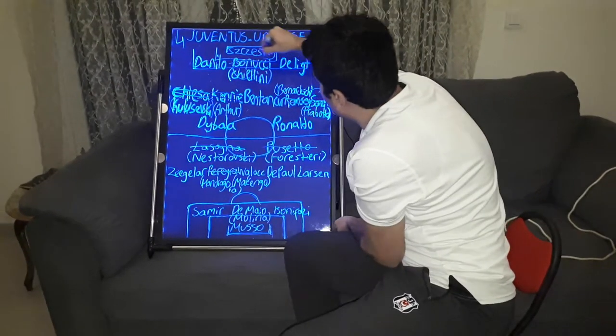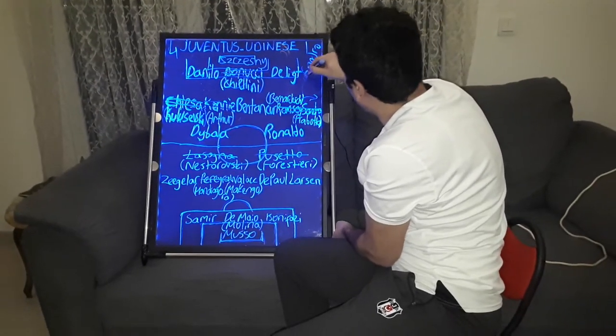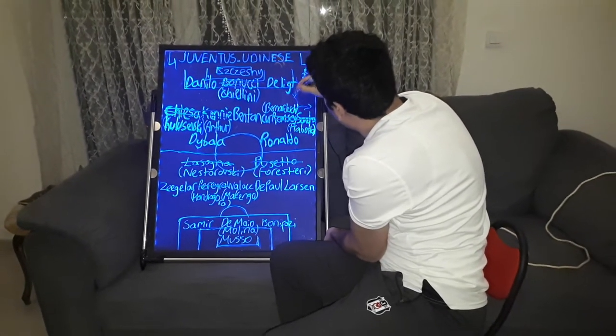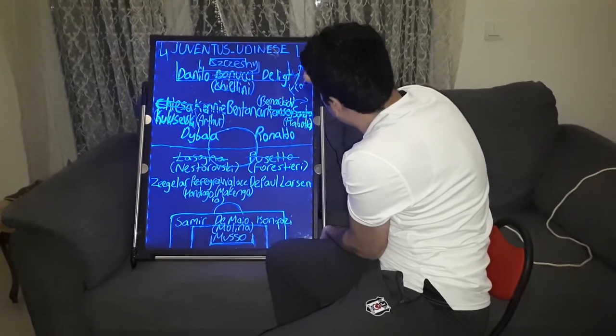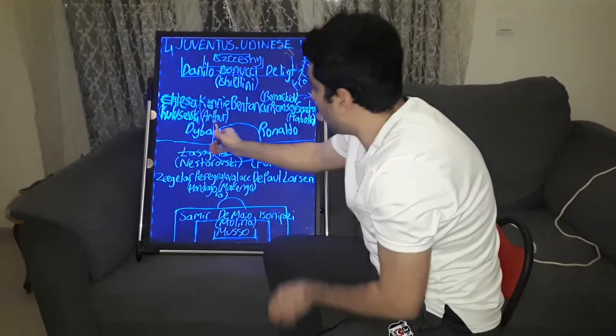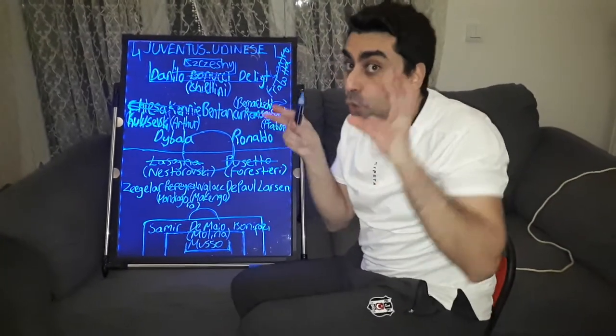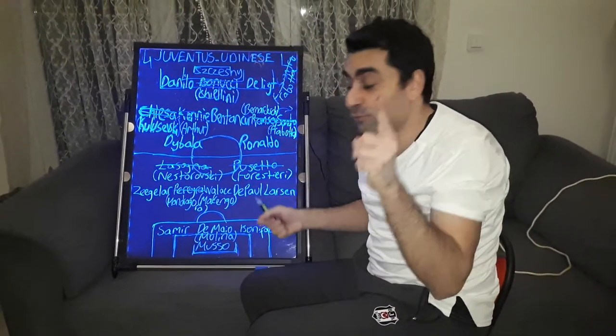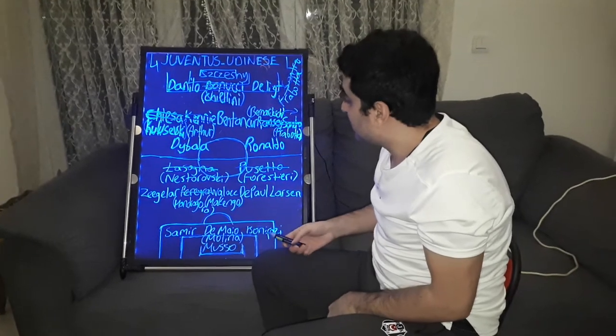Last two substitutions: Bonucci out, Chiellini in and Sandro out, Frabotta in. Frabotta played on the left back. And Dybala was so ambitious and hard-working all the game and he found the last goal for Juve.